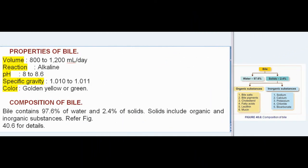Properties of bile: Volume is 800–1200 ml per day. Reaction is alkaline with a pH of 8 to 8.6. Specific gravity is 1.010–1.011. Color is golden yellow or green. Bile contains 97.6% water and 2.4% solids. Solids include both organic and inorganic substances.